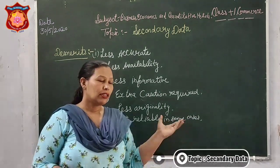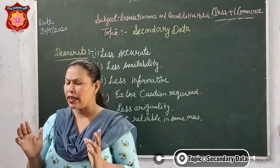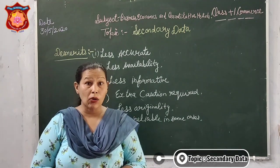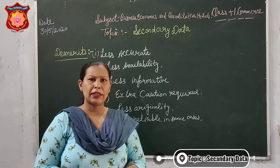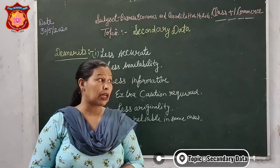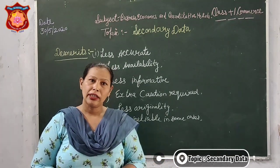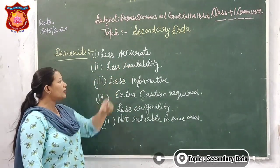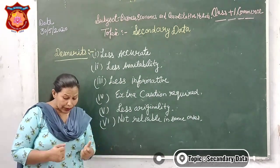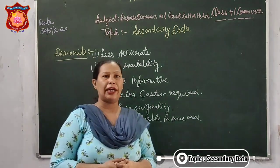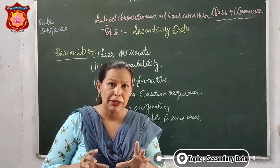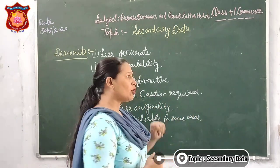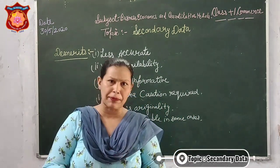Sometimes, if a person has collected the data, it may not be accurate — they may not have verified their results. So secondary data can be less accurate. Next demerit is less availability — sometimes the secondary data we need to study may not match our objective, so it may not be available for our specific purpose.